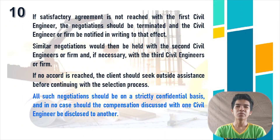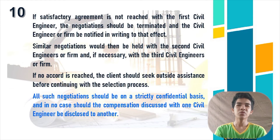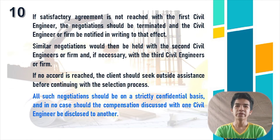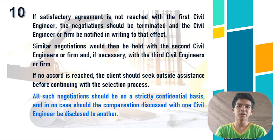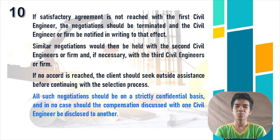Ten, if a satisfactory agreement is not reached with the first civil engineer, the negotiations should be terminated and the civil engineer or firm notified in writing to that effect. Similar negotiations would then be held with the second civil engineer or firm, and if necessary, with the third. If no accord is reached, the client should seek outside assistance before continuing with the selection process. All such negotiations should be on a strictly confidential basis, and in no case should the compensation discussed with one civil engineer be disclosed to another.